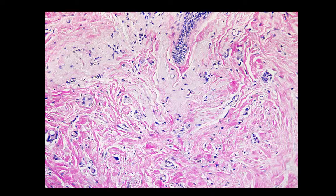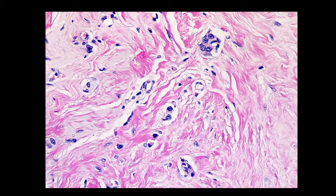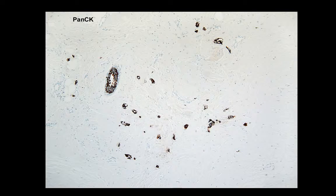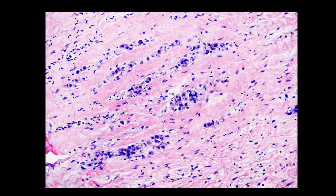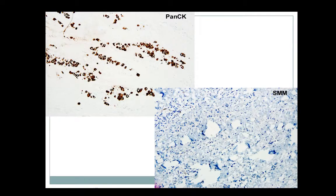I always tell residents and fellows: all tumor beds need a high-power examination. Low-power may look like just inflammatory cells or histiocytes, but then you see scattered cells that could be tumor. Do a keratin stain — if those cells are keratin-positive, those are residual tumor cells. It makes a huge difference clinically because patients will get additional therapy when there is residual cancer. Similarly, if you see a lobule and can't tell if it's in situ or invasive, do your keratin and smooth muscle myosin — if cells lack myoepithelial layer around them, those are invasive cancer.